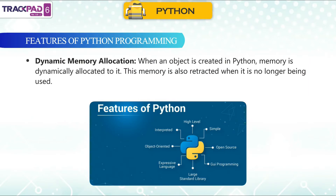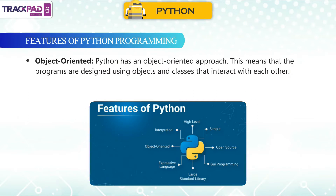Python supports dynamic memory allocation — when an object is created, memory is dynamically allocated to it, and this memory is retracted when it is no longer being used. Python also has an object-oriented approach, meaning programs are designed using objects and classes that interact with each other.